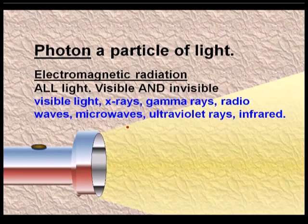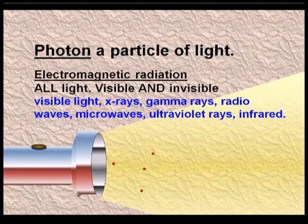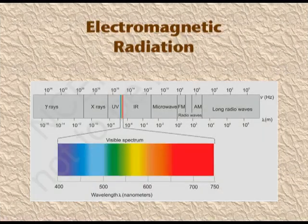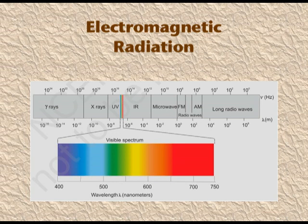You can see the particle nature and the wave nature. The electromagnetic spectrum is shown on the slide. There are many regions in the electromagnetic radiation, known by different names. They all differ in wavelength and frequency.